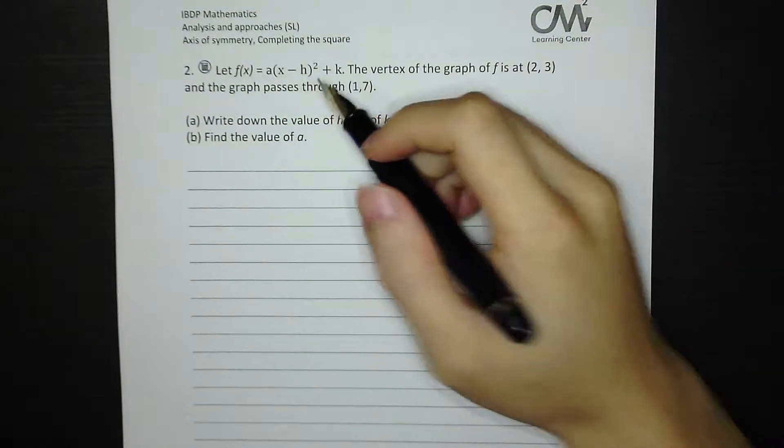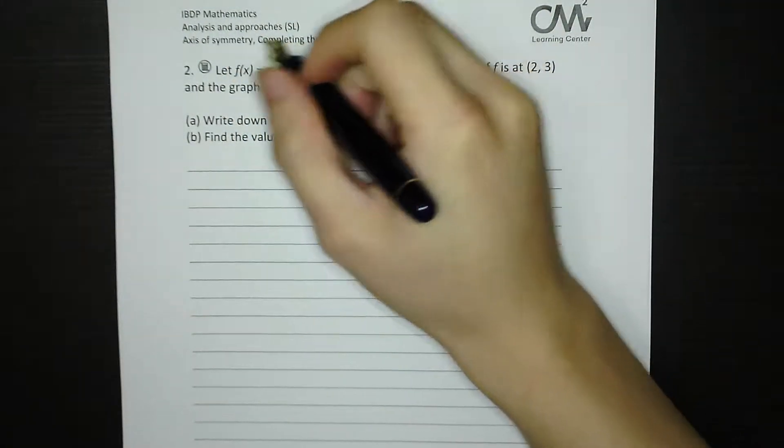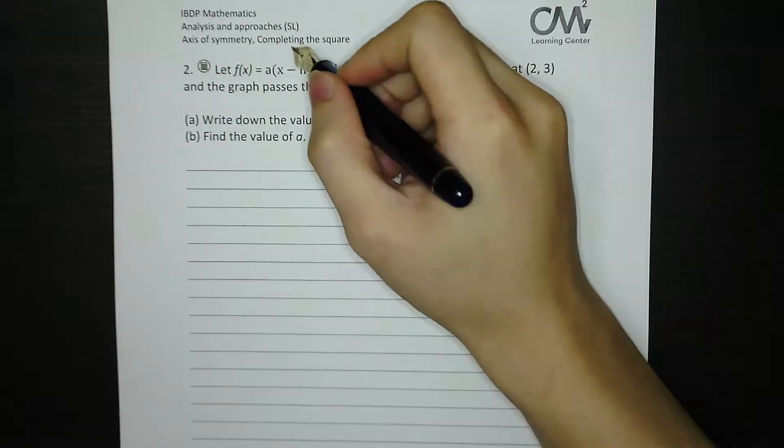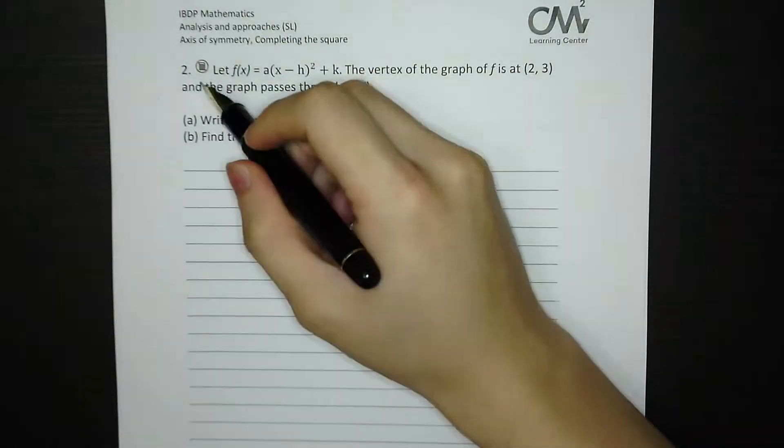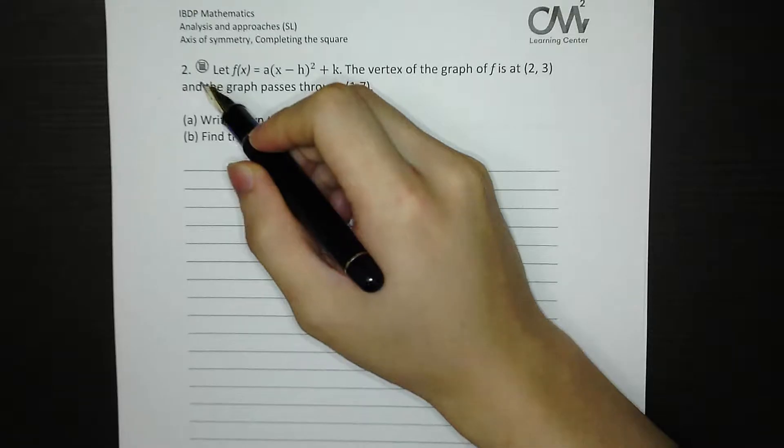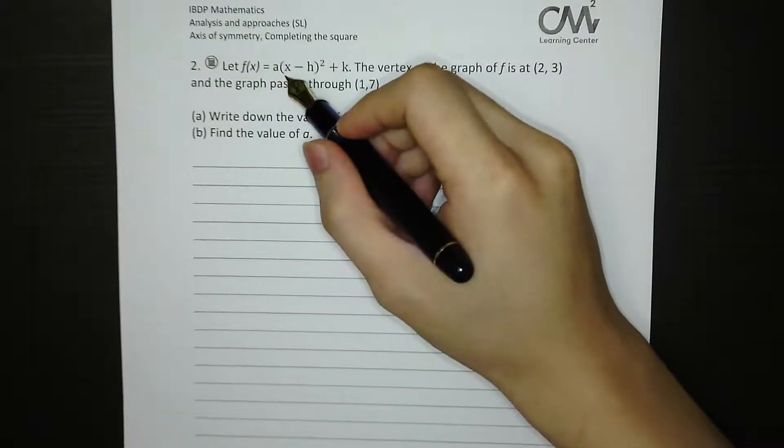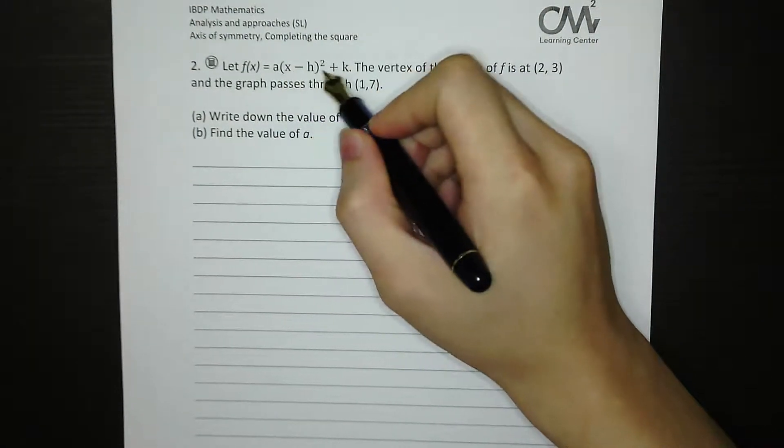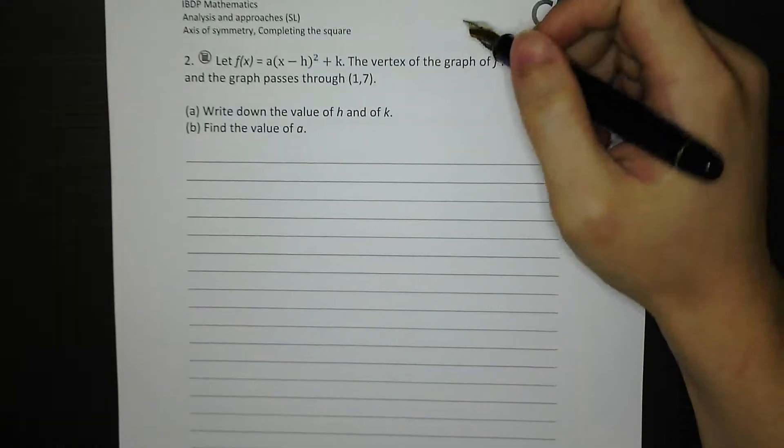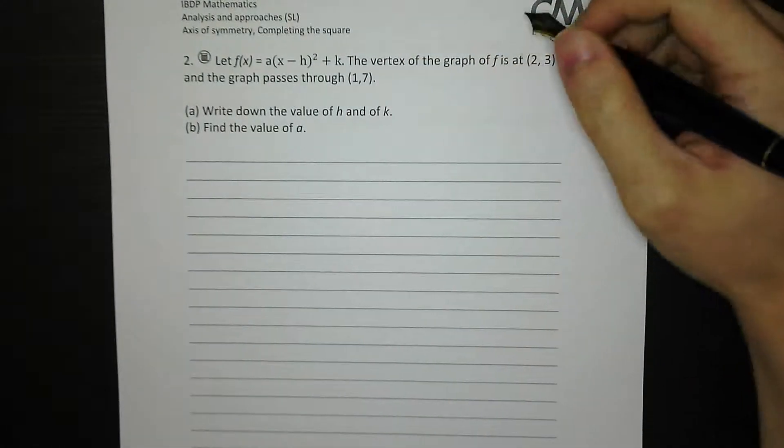That's for topic functions, finding the axis of symmetry and also completing the square. So that's paper one, no calculator questions. Let f(x) = A(x - h)² + k. The vertex of the graph of f is at 2, 3.